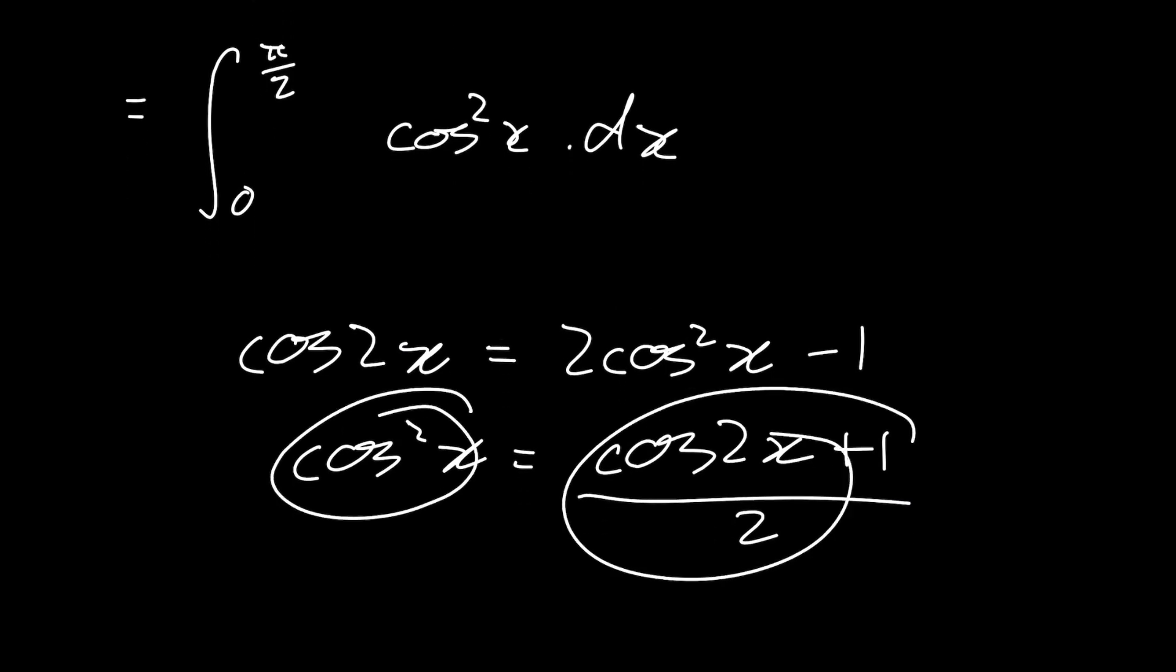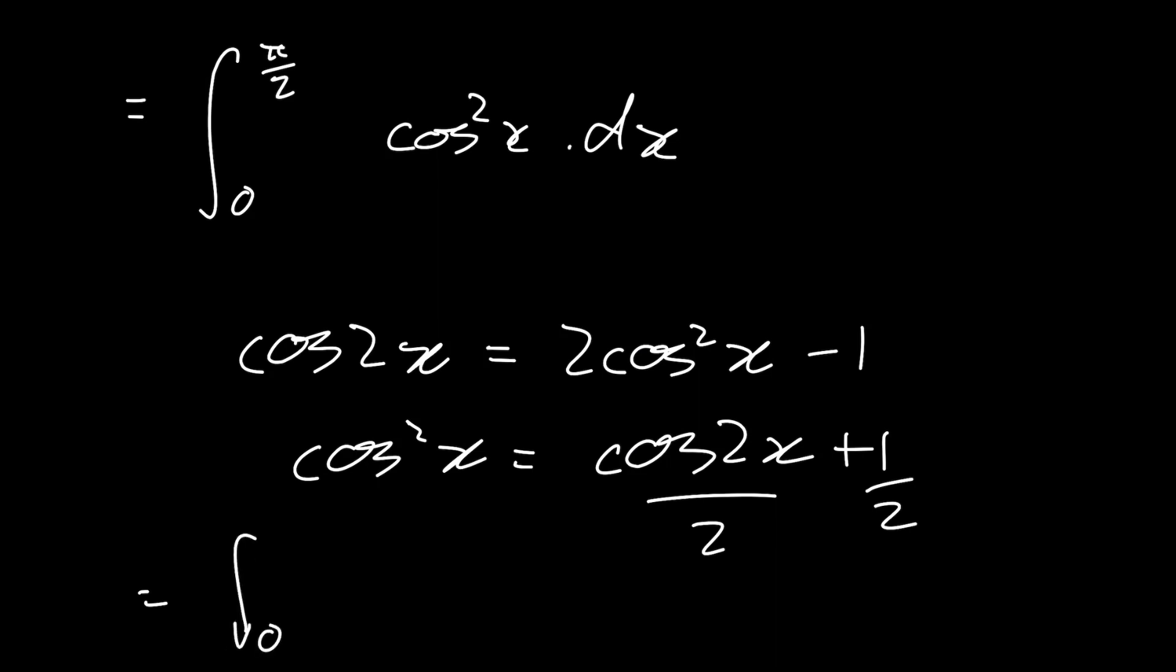So now for cosine squared of x, I'm going to substitute in cosine of 2x plus 1 over 2, which is also the same thing as cosine of 2x over 2 plus 1 over 2. So we now have the integral from 0 to pi by 2 of cosine of 2x over 2 plus 1 over 2 dx.